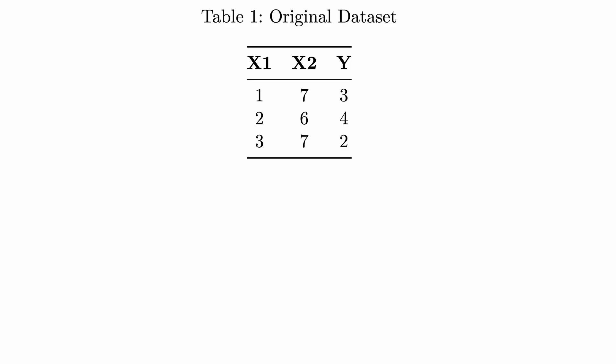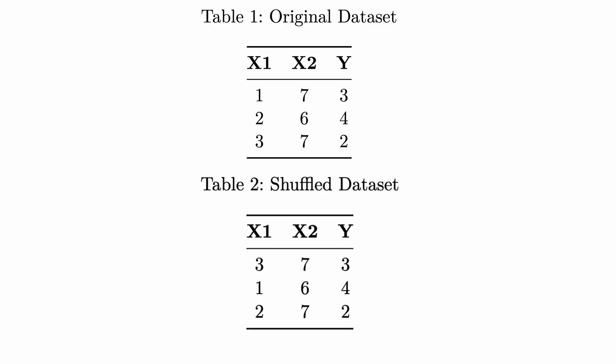Let's say you want to estimate how important variable x1 is. The first step is to compute the accuracy of the model — let's assume we're doing a binary classifier, predicting who died versus not. You decide to start with x1. You get your original data set and shuffle the x1 scores, leaving x2 and y untouched. Shuffling breaks any association that variable had with the outcome — essentially replacing it with a random variable at the same scale.